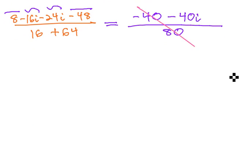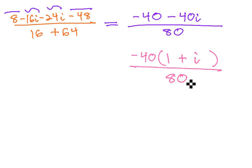Recall we can only reduce if it's factored first. So we need to factor the greatest common factor of negative 40 out of the numerator. Leaves us with 1 plus i over 80.